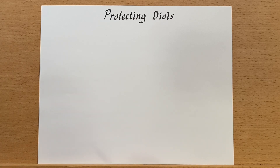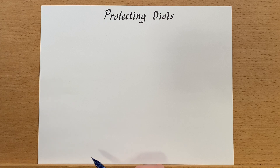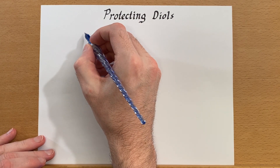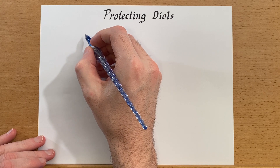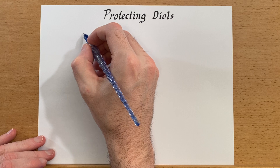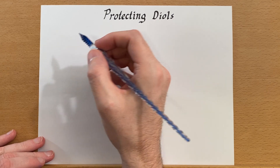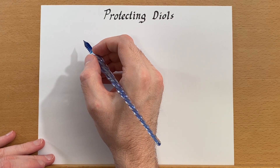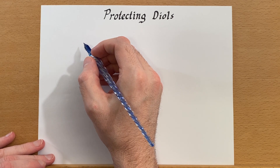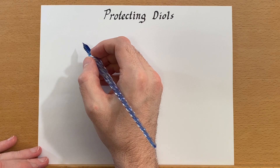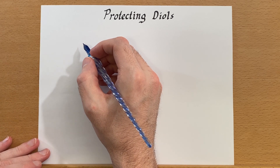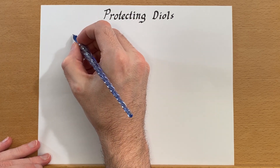There's one more group we'll talk about how to protect, and that is how to protect diols. This is related to how to protect alcohols, but it's actually more related to how to protect ketones, and you'll see why. This will only work if the two alcohols are close enough together — either 1-2 or 1-3 positioning. If they're further apart than that, this is unlikely to work and you'll have to protect them using one of the other methods for protecting alcohols.